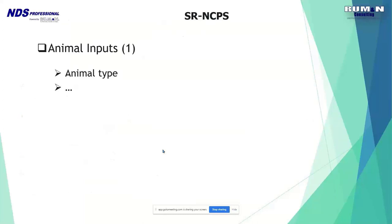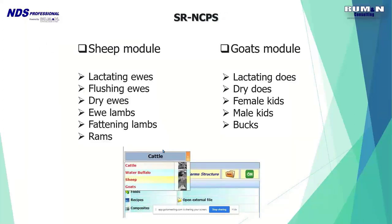From a practical point of view, animal inputs are very similar to the NDS larger ruminants. Animal type is specified — these are the animal types represented in the small ruminant CNCPS. One category worth emphasizing is flushing ewes — those fed a specific diet just before breeding. Those animals have higher requirements, so they are separated from the lactating ewes. Animal types for goats are also included.